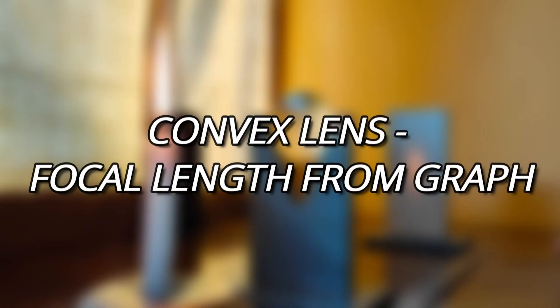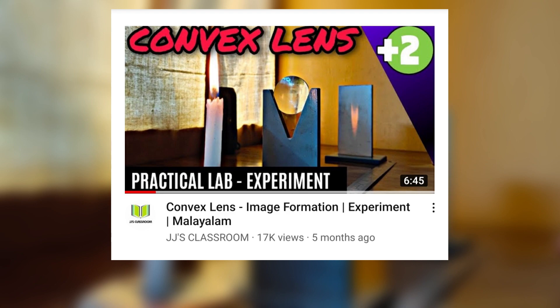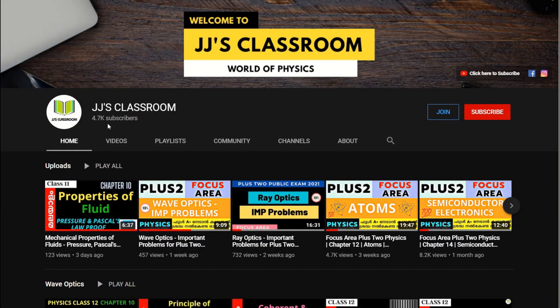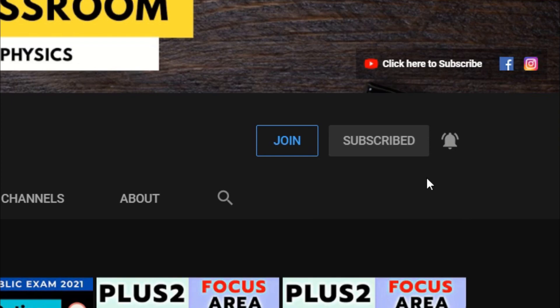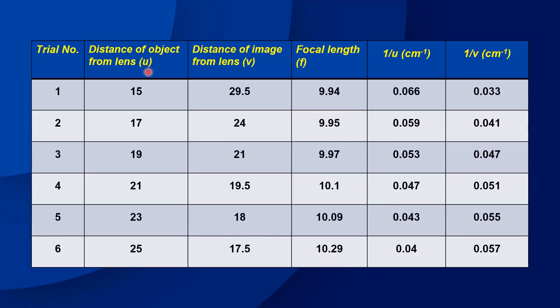Hello. I am going to calculate the UV graph and the 1/U vs 1/V graph. We are going to try to calculate the focal length of a convex lens. In the convex lens UV method, U is the distance of the object from the lens, V is the distance of the image from the lens, and F is the focal length.